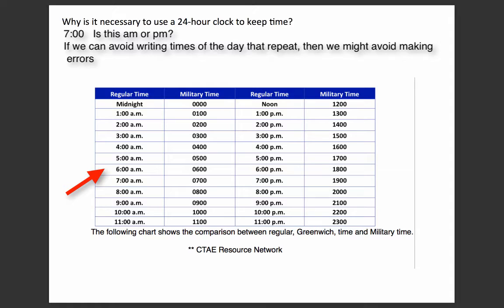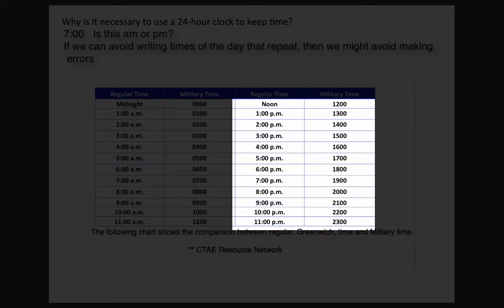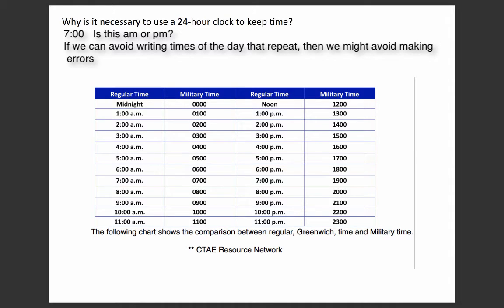Where it starts to get a little bit different is with p.m. values. For example, 1 p.m. is 1300, and 8 p.m. is 2000. These times start to get different in the afternoon. You're welcome to use this chart as you learn, but it is expected that you'll be able to convert between the two without looking at a chart. Let's take a look at some examples and some ways to think about converting between the two types of time.